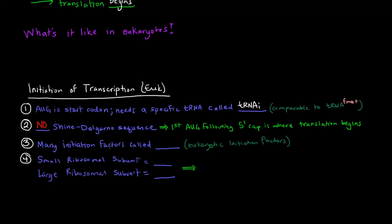There are many initiation factors, and they're called EIFs, and the E just stands for eukaryotic. The last thing is that the small ribosomal subunit in eukaryotes is 40S, and the large one is 60S, and you might think that'll add up to 100S. And that's not the case. 40S plus 60S will equal an 80S complete ribosome. So that's the difference in eukaryotes.